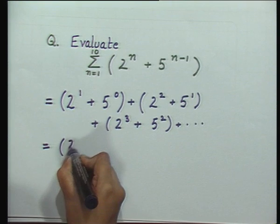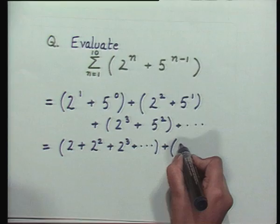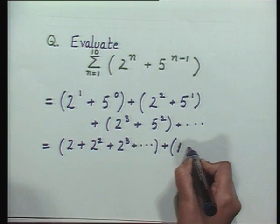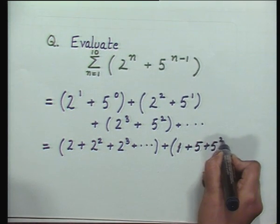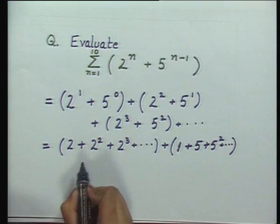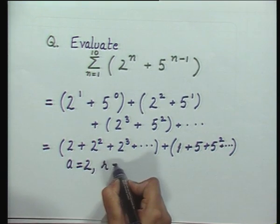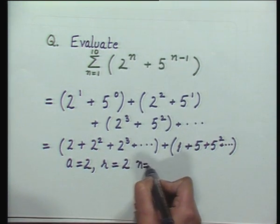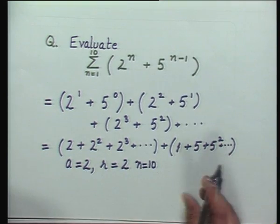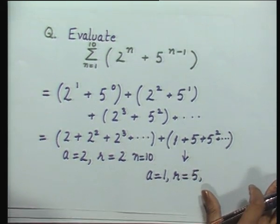What you actually have is two series. The first is 2 + 2² + 2³ and so on, and the second is 5^0 + 5 + 5² and so on, which is 1 + 5 + 5² and so on. For the first bracket, a = 2 and it is a GP. For the second series, is it again a GP? Yes, ma'am. With a = 1, r = 5, and how many terms? 10 terms. So again we have two GPs with a, r, and number of terms known.